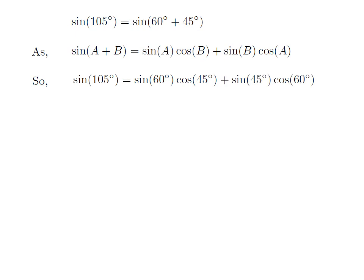To find sine of 105 degrees, we just have to replace A with 60 degrees and B with 45 degrees in the above formula. So, sine of 105 degrees equals sine of 60 degrees into cosine of 45 degrees, plus sine of 45 degrees into cosine of 60 degrees.